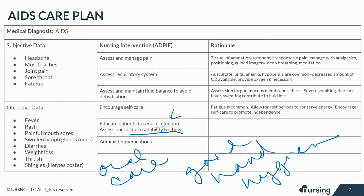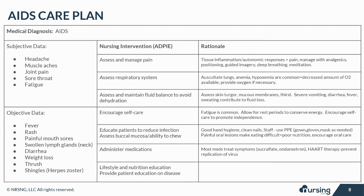Encourage and provide regular oral care to increase appetite and reduce oral discomfort. As far as medications are concerned, most are given to treat the symptoms, such as ondansetron. Anti-HIV medications are available and help to prevent the replication of the virus in the body. Lifestyle and nutrition education is critical. Encourage patients to correct any lifestyle habits that worsen symptoms or spread the disease — avoid drug use and sharing of needles, and encourage patients to inform sexual partners of the disease. Avoid raw eggs and meats, and encourage a healthy diet to increase immune function.